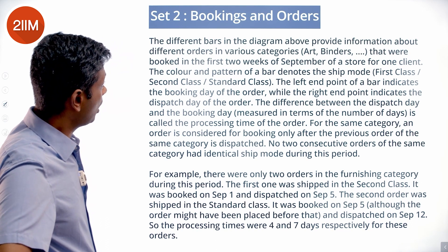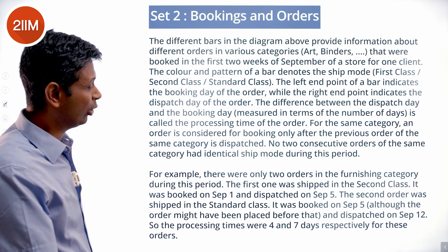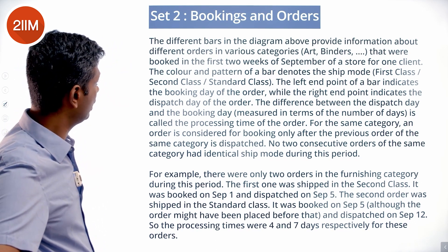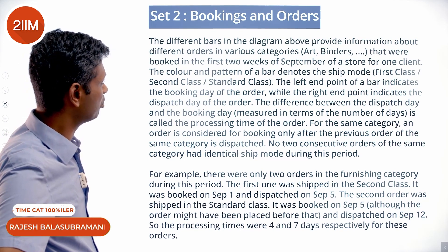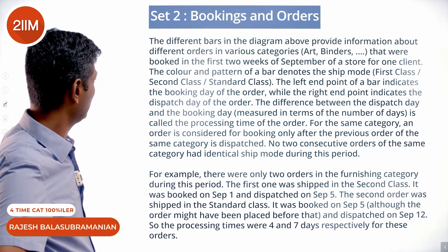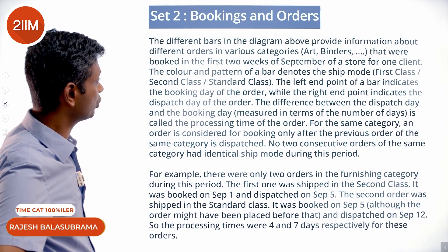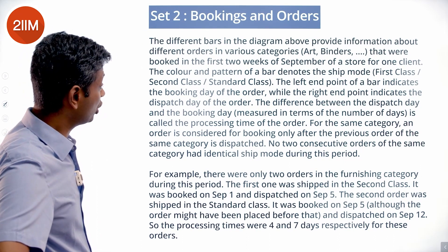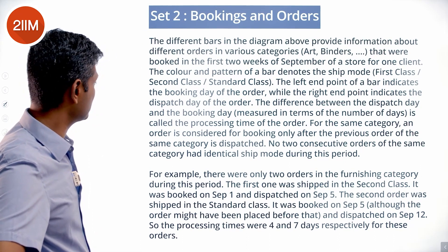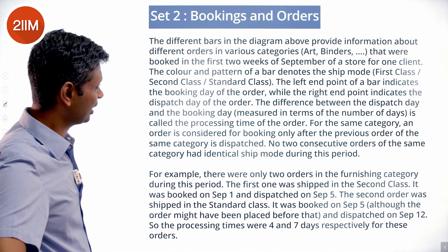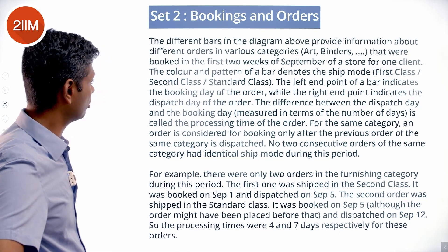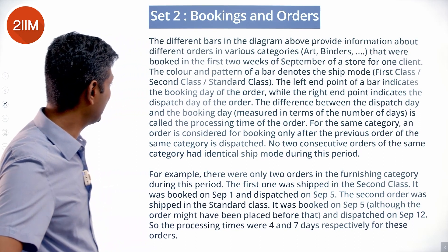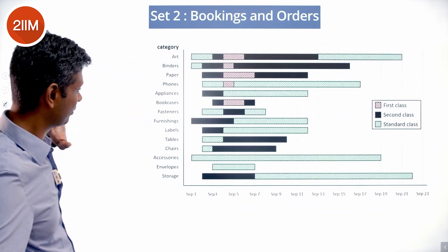The bars in the diagram provide information about different orders in various categories — art, binders, etc. — booked in the first two weeks of September for one client. The color and pattern of a bar denotes a ship mode: first class, second class, standard class. The left endpoint of a bar indicates the booking day of the order, while the right endpoint indicates the dispatch day.